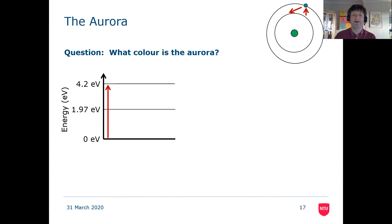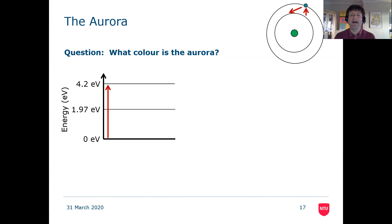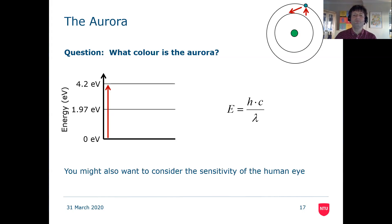And this leads to a couple of questions I want to pose at the end of this video. What colour is the aurora? We know what colour the Northern Lights is — we see things like greens and reds — but how can you work it out from an energy level diagram like this? You might want to use this equation: E (energy) equals h (Planck's constant) multiplied by c (the speed of light in free space), divided by wavelength. You might also want to consider the sensitivity of the human eye. See if you can work out from that what colour is the aurora, and also what colours are most commonly seen and why.